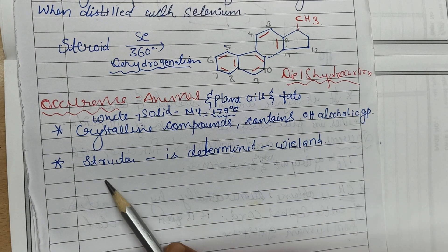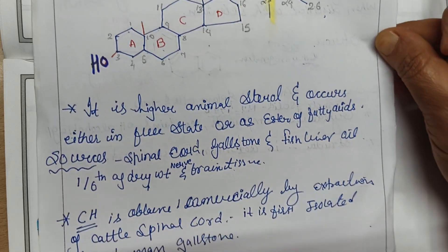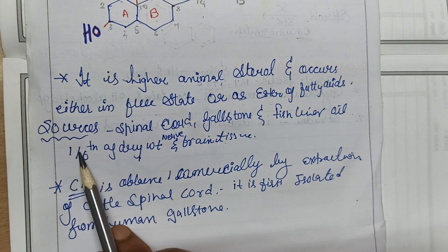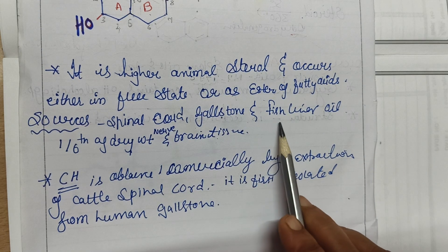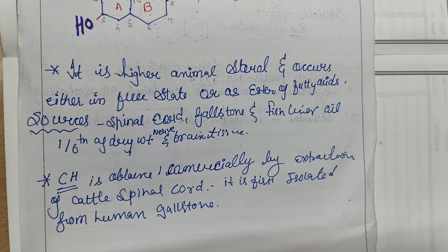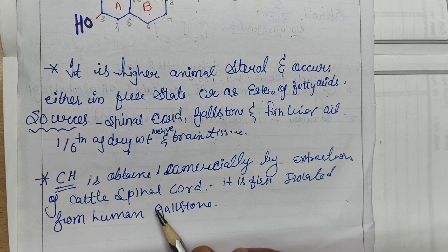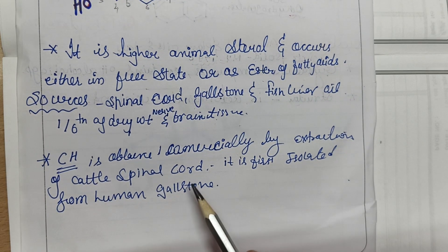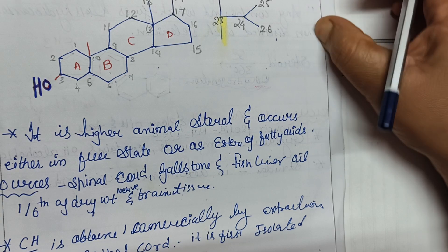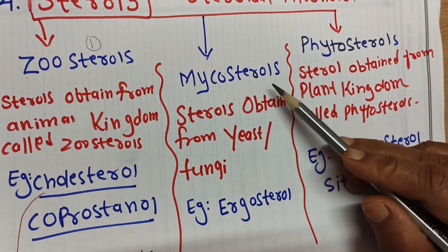The structure of cholesterol was determined by Wieland. It is a higher animal sterol occurring either in the free state or as esters of fatty acids. Sources of cholesterol include the spinal cord, gallstones, fish liver oil, and the nervous system — one-sixth of the dry weight of brain tissue is cholesterol. Commercially it is prepared by extraction from cattle spinal cord, and it was first isolated from human gallstones.